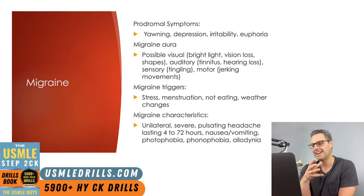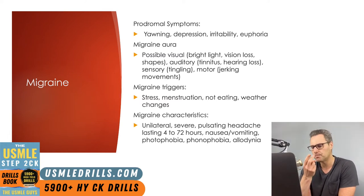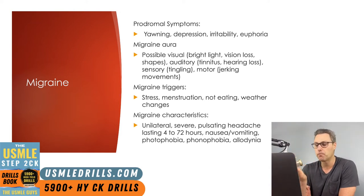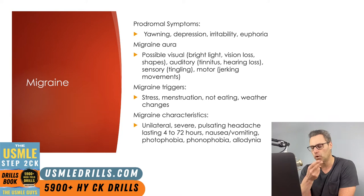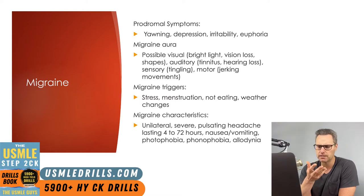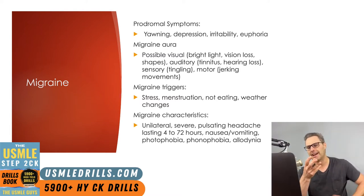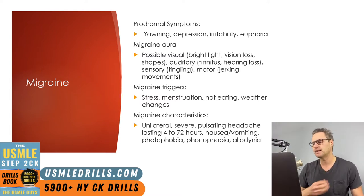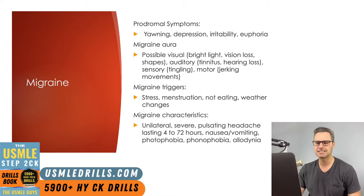The characteristics of a migraine headache include being unilateral, severe, pulsating, lasting from 4 to 72 hours, and may include nausea and vomiting, photophobia, phonophobia, and possibly allodynia — which is experiencing pain with activities that should be painless, like combing your hair or rubbing up against a bed sheet.